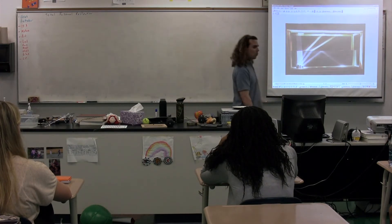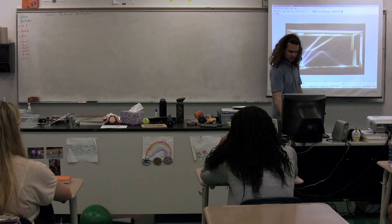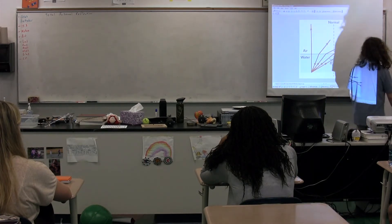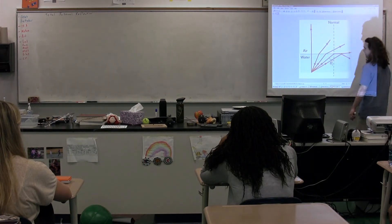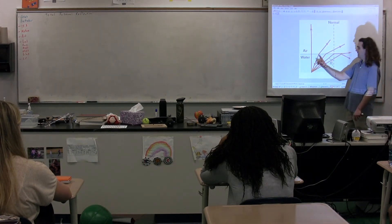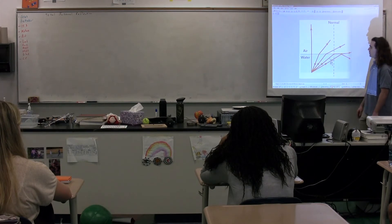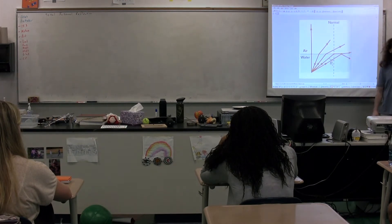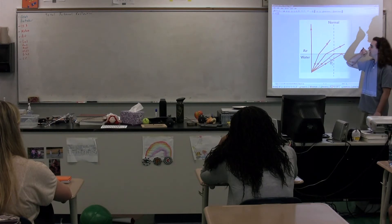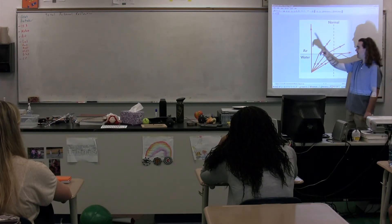In order to understand why this happens, we need to look at this ray diagram, which is also from your text. If we have light coming out of the water, going from the water into air, we already know the index of refraction of water — it is 1.333. We already know the index of refraction of air.